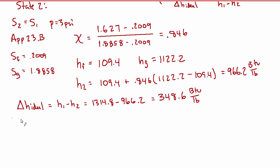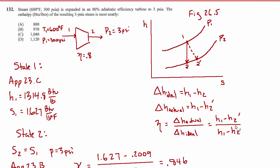But of course it is not isentropic, so now it's time to account for that. Delta h actual is equal to the efficiency times delta h ideal. For our case, that's 0.8 times 348.6, which equals 278.9 BTU per pound, only 80% of what the delta h would have been in the ideal case.